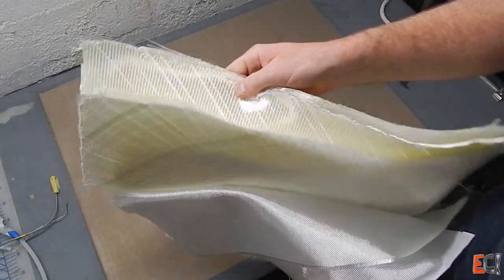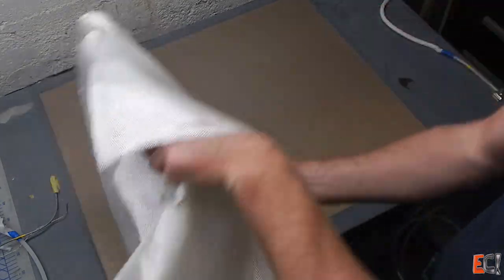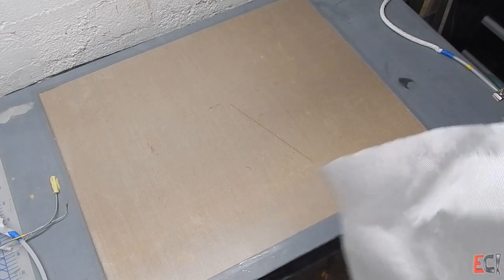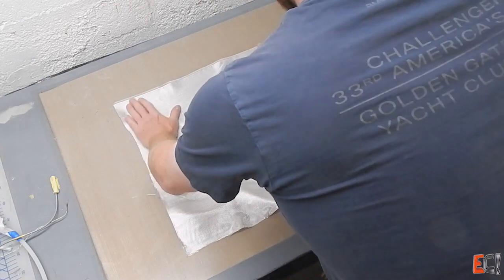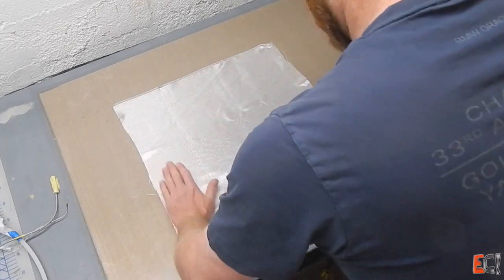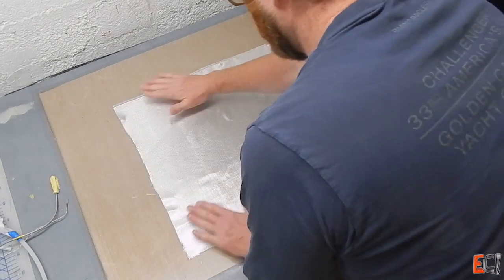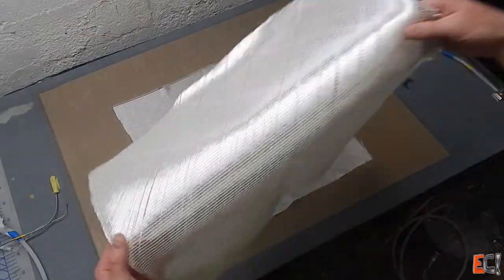It has surface plies of 200-gram woven e-glass, 6-ounce, 200-gram, and 12-ounce, 400-gram-ish, three plies in the middle of stitched biaxial.